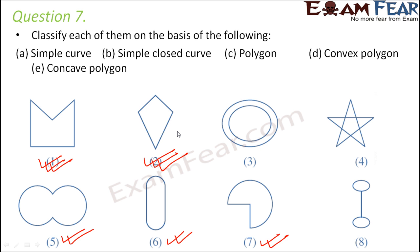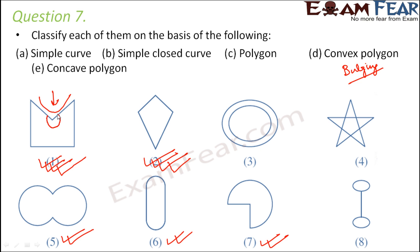Out of these two, some will be concave and some convex. Convex polygons are the bulging polygons where all inner angles are less than 180 degrees — figure two would be a convex polygon. For concave polygons, there should be a cave or depression, so figure one is a concave polygon because it has one angle greater than 180 degrees. That's how we classify looking at the images.